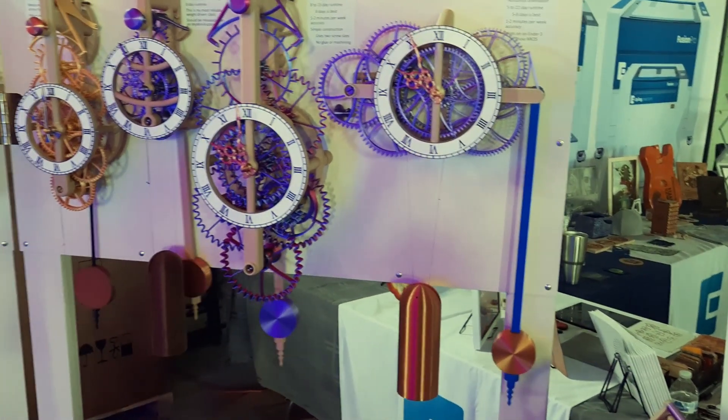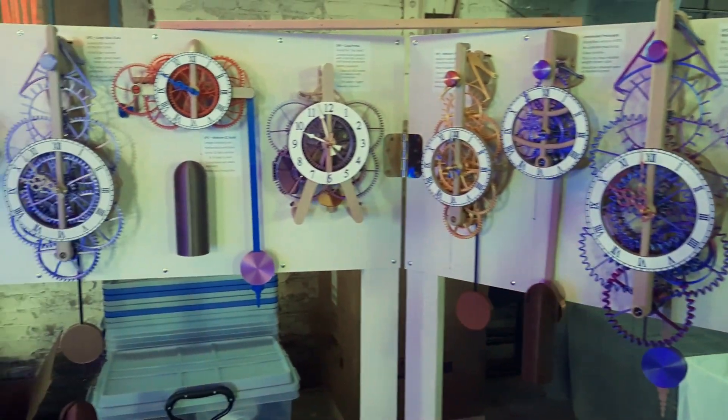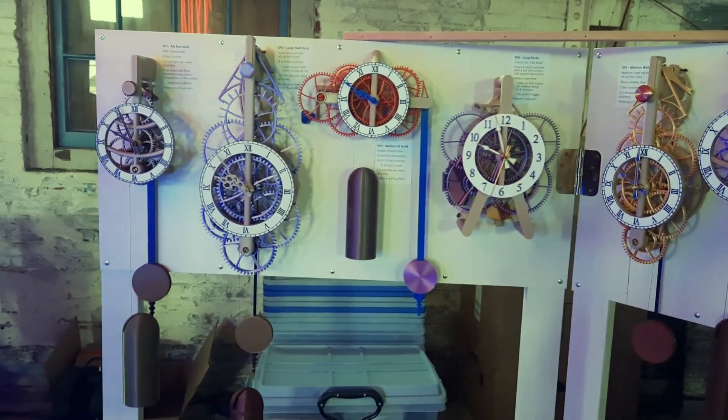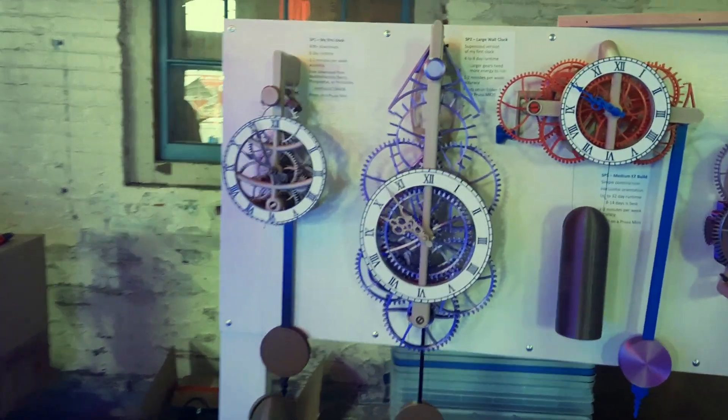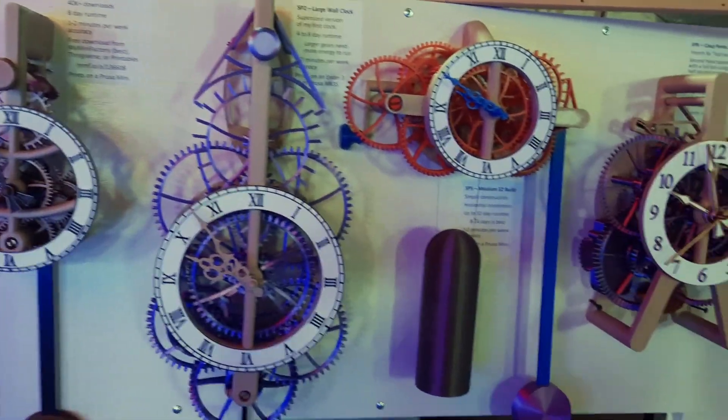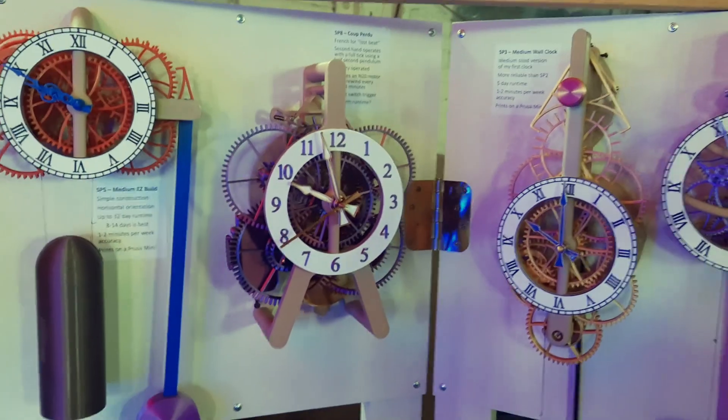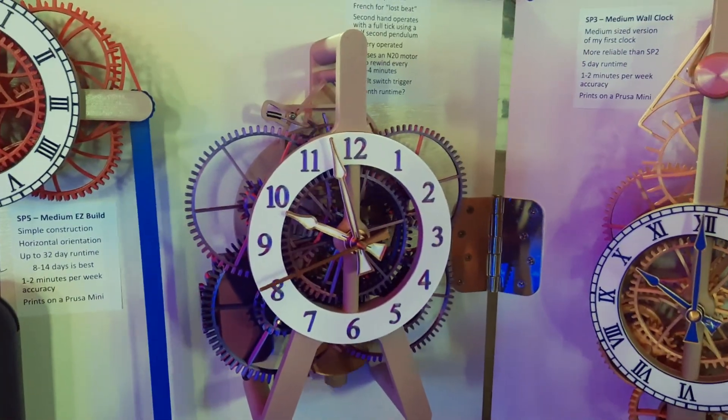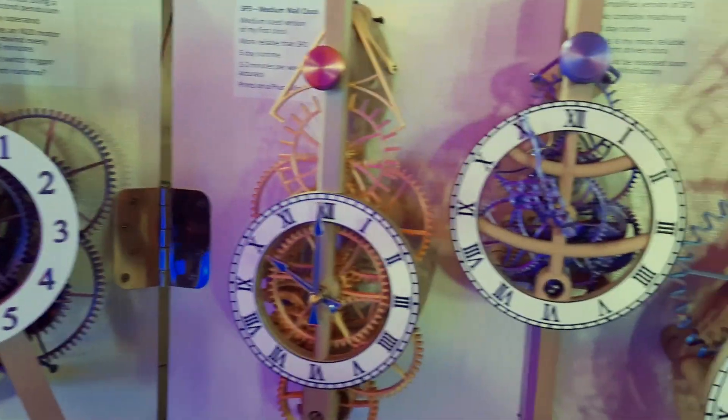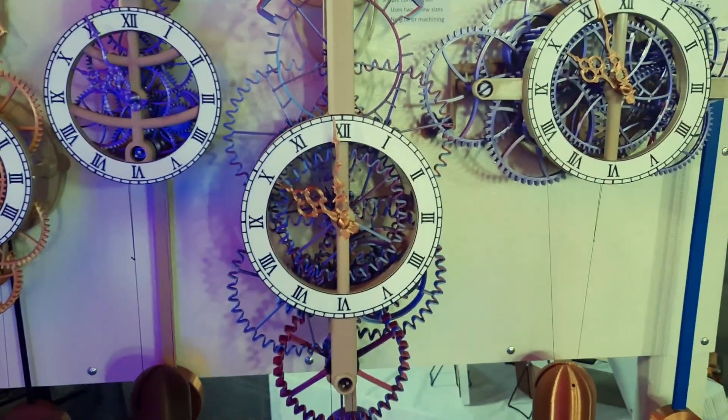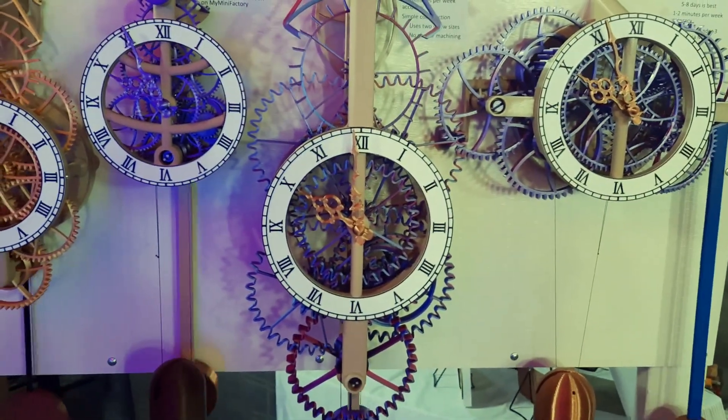And then a whole wall of eight different weight-driven clocks, starting with my very first clock, and the second clock, and a couple of other clocks. This is the coupe-perdue escapement, and then what I call the large crazy gear clock.